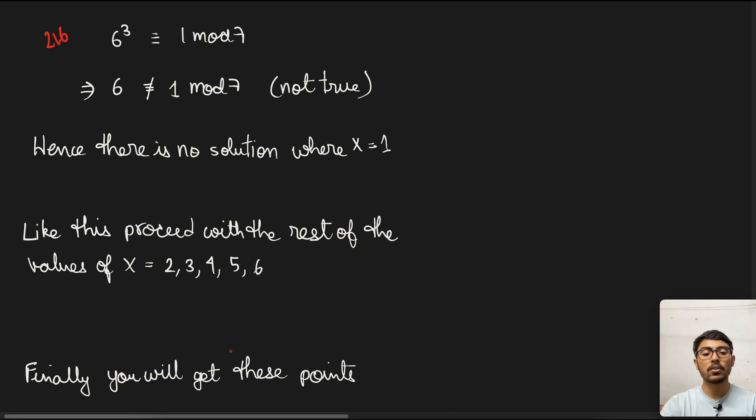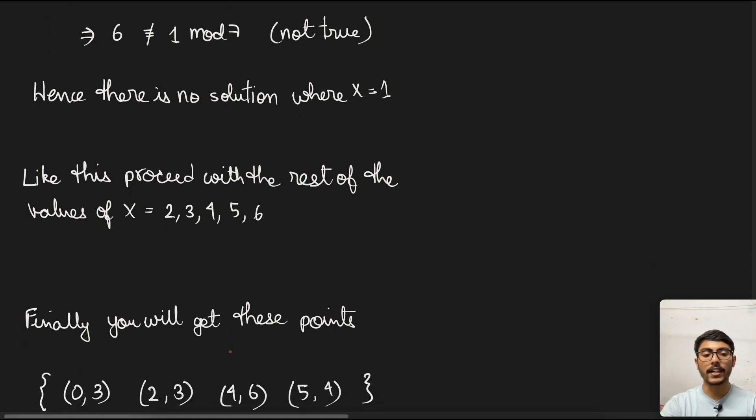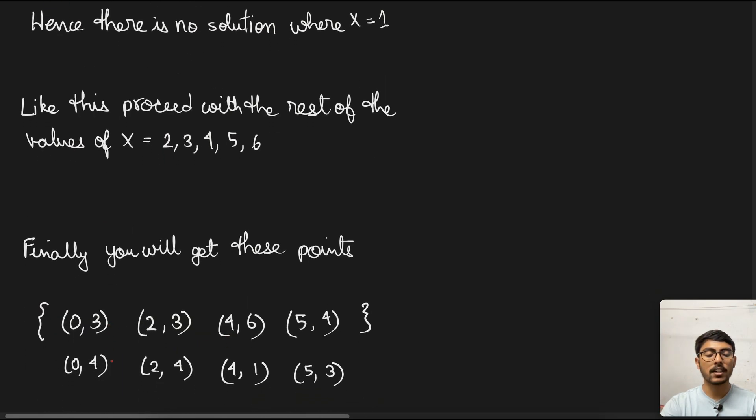Similarly, you have to proceed with the rest of the values of x: 2, 3, 4, 5, and 6. I would suggest you pause the video here and try to find out the points yourself. Okay. Next, we move to the actual points that we will find. Here are the points: (0,3), (0,4), (2,3), (2,4), (4,6), (4,1), (5,4), (5,3).